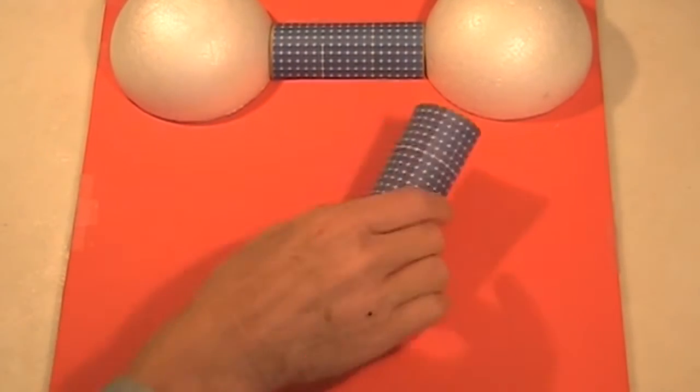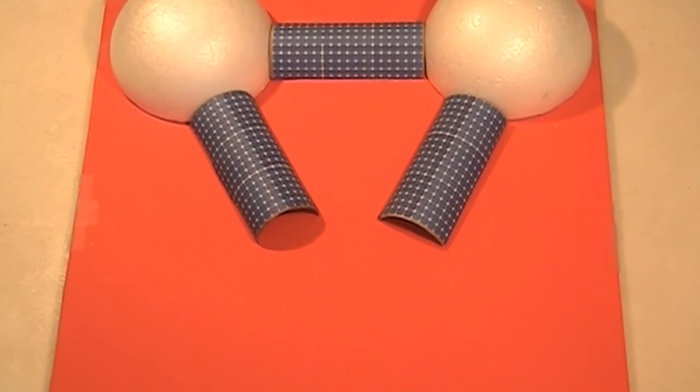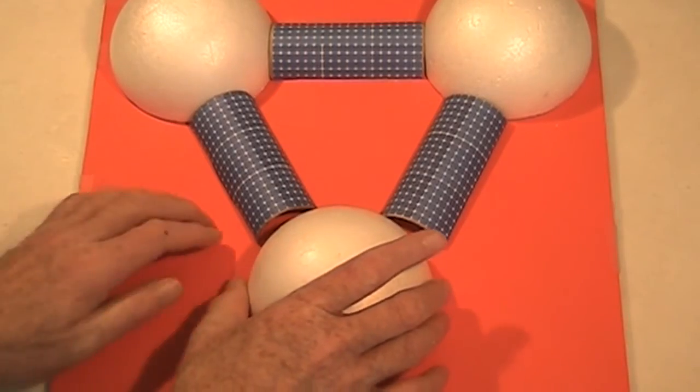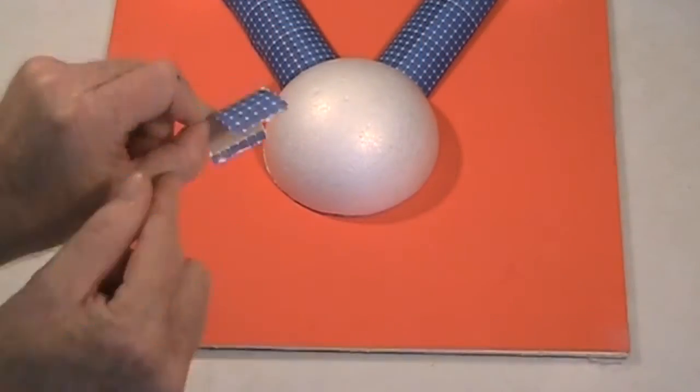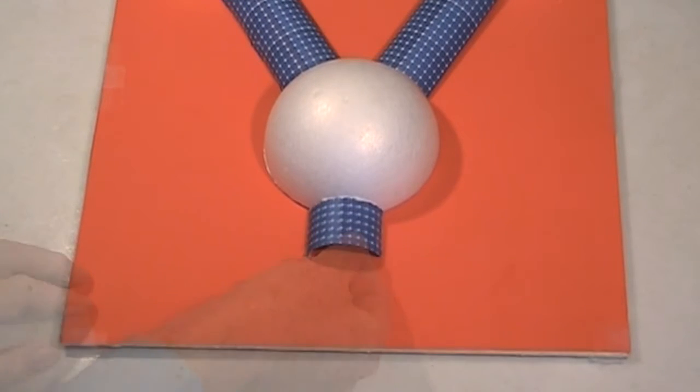Now take the other two long tunnels and place them on the board, kind of pointing to the end. Place the last styrofoam ball there and glue it down. Last, you'll need the little tunnel and glue it right to the front of the last ball.